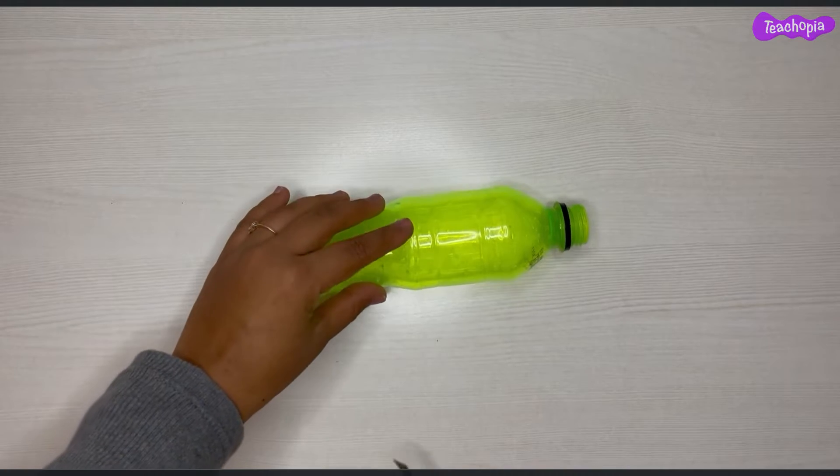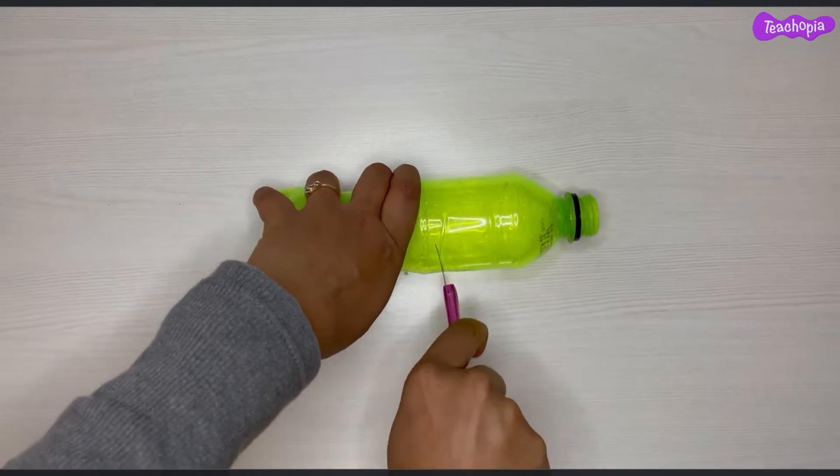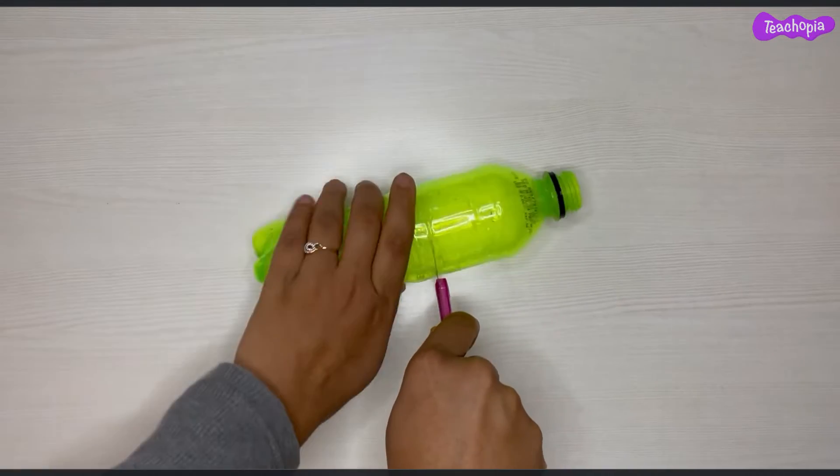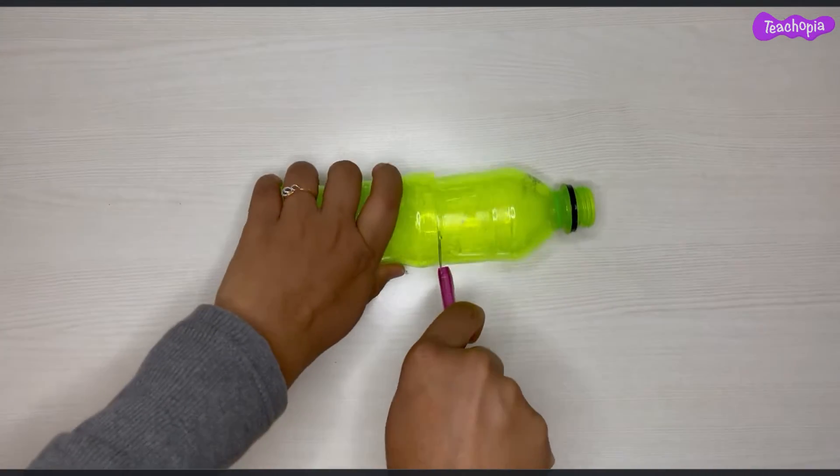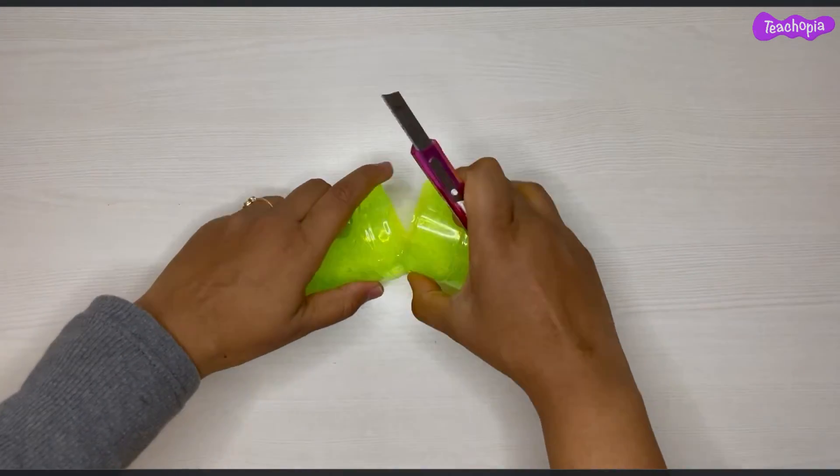Now, let us see how to do this activity. Take the transparent bottle and use the paper cutter to cut the bottle into two parts, one bigger and the other smaller, respectively.